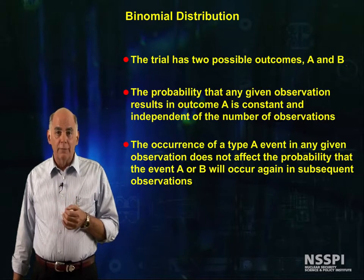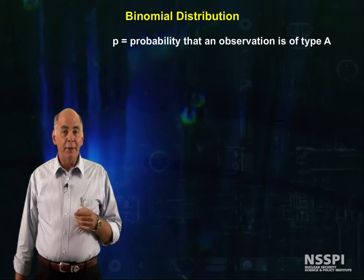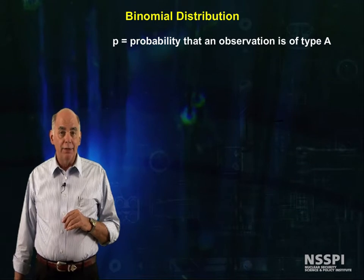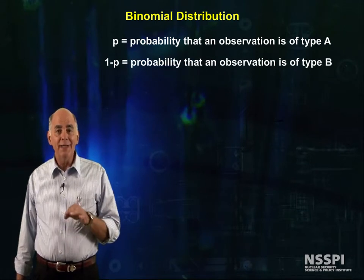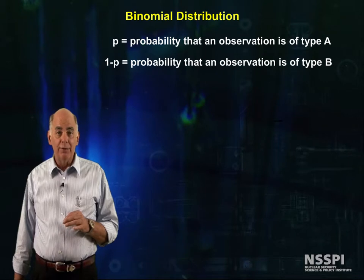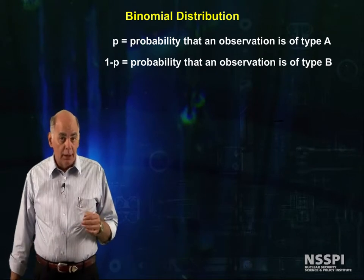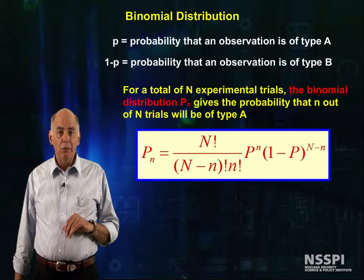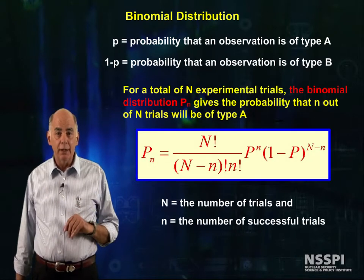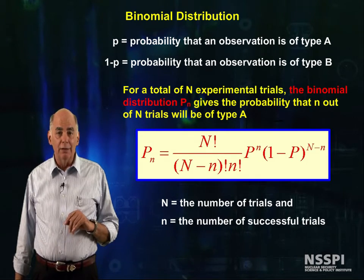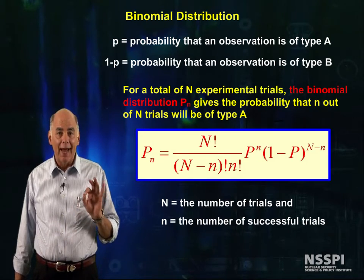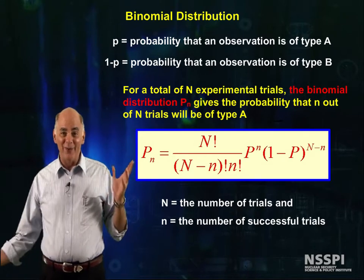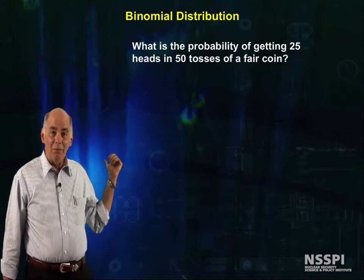Now let's put some math to it. If we let P be the probability that an observation is type A, then by definition 1 minus P is the probability that the observation is of type B. If we have N experimental trials, the binomial distribution P sub n gives the probability that little n times out of big N trials will be of type A.